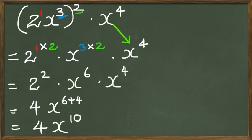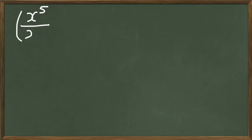Hopefully this gives you a general idea of multiplication. Now I want to do a little bit of division of indices mixed with powers of powers. So let's start with a question like this: x to the power of 5 divided by x squared, and this is raised to the power of 4.